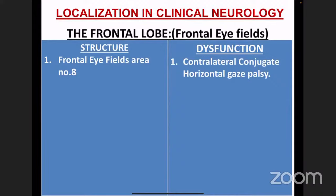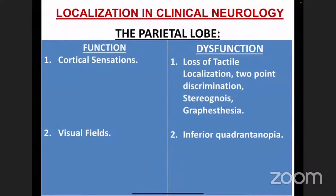Eyes looking towards the same side as the lesion and hemiplegia on the opposite side is characteristic of a frontal lobe lesion, especially when the frontal eye field area number 8 is affected. These are all the important functions of the frontal lobe.